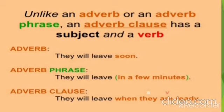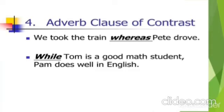Another example is the adverb clause of contrast. 'We took the train, whereas Pat drove.' Here, whereas is the adverb and 'whereas Pat drove' is the adverb clause. 'While Tom is a good math student, Pam does well in English.' While is the adverb and 'while Tom is a good math student' is the adverb clause.